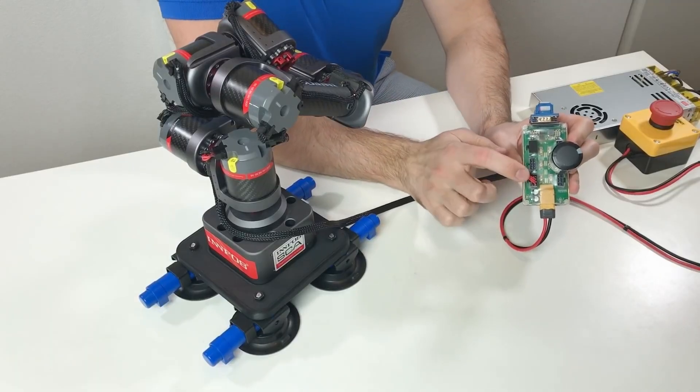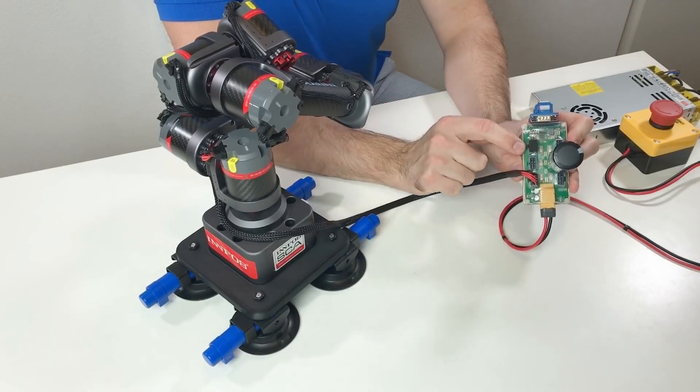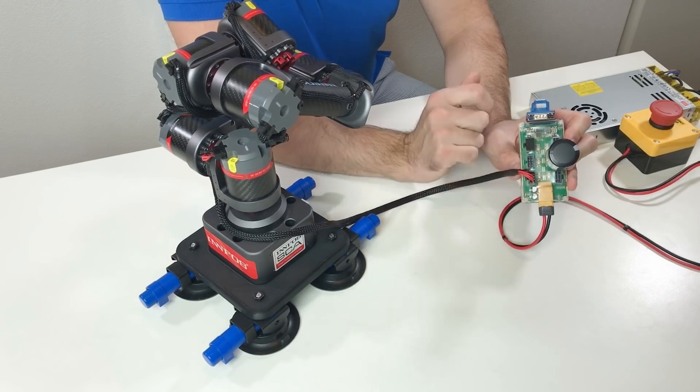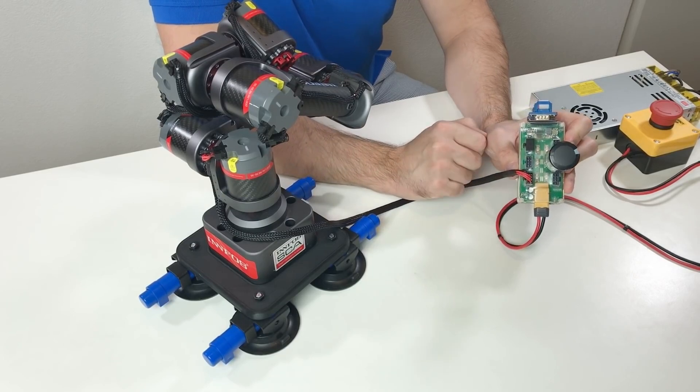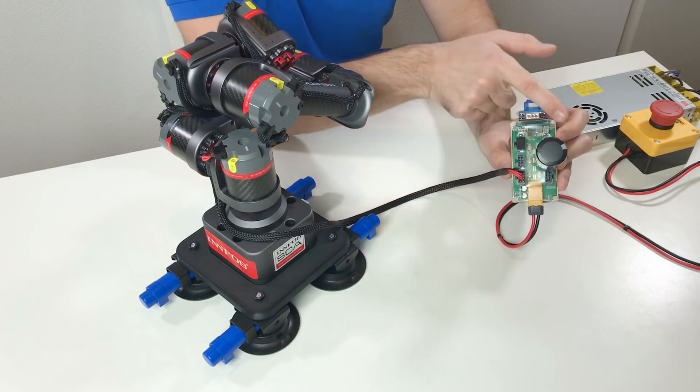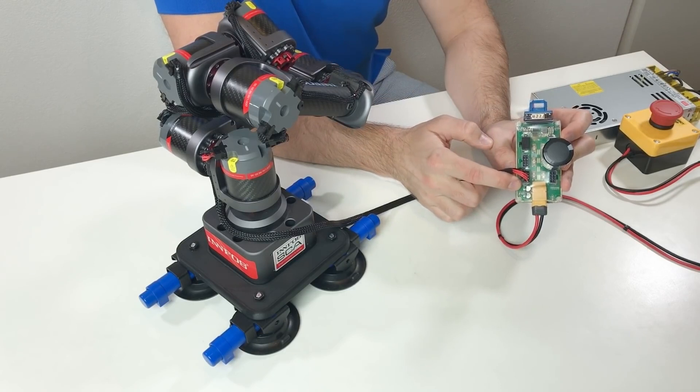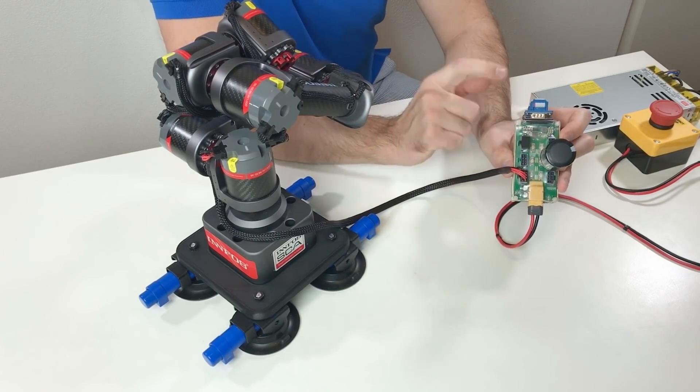By the way it is important that the robot and the termination resistor is connected to the same CAN bus, either to these connectors or to these connectors. But you should not put the termination resistor here and the CAN bus here. And the capacitor could be connected anywhere.